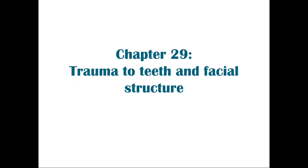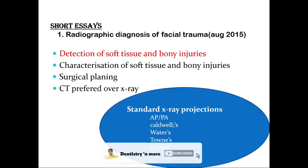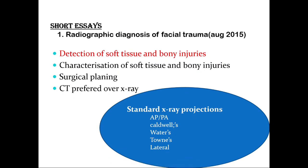The last chapter is trauma to the teeth and facial structures. The question that can be asked is radiographic diagnosis of facial trauma. You can refer to the textbook of oral radiology by White and Pharoah, under the trauma chapter. The radiological signs of fractures include about four general signs: the presence of one or two sharply defined radiolucent lines with anatomic boundaries of a structure, and a change in the normal anatomic outline or shape of the structure indicating the presence and location of the fracture.